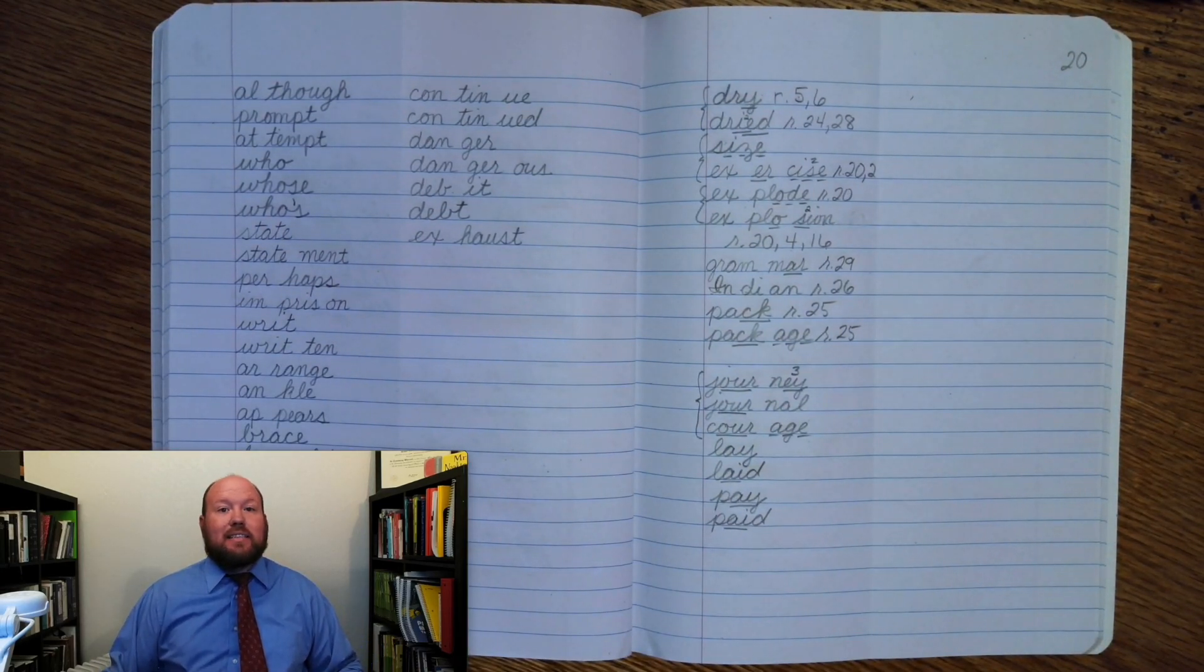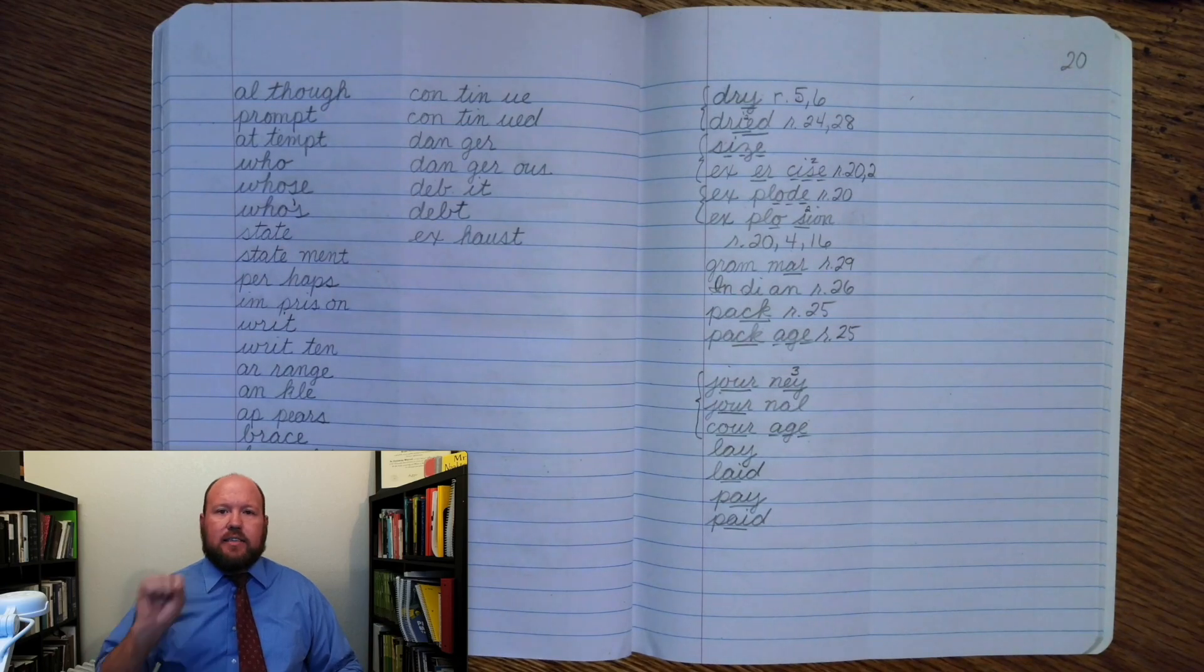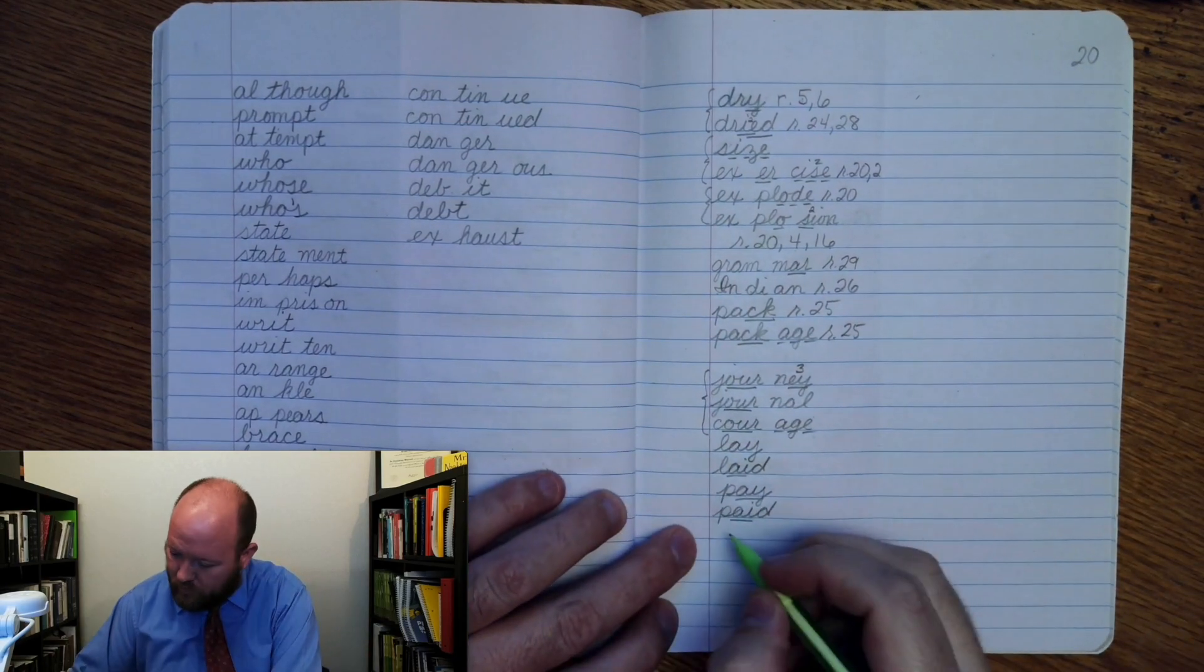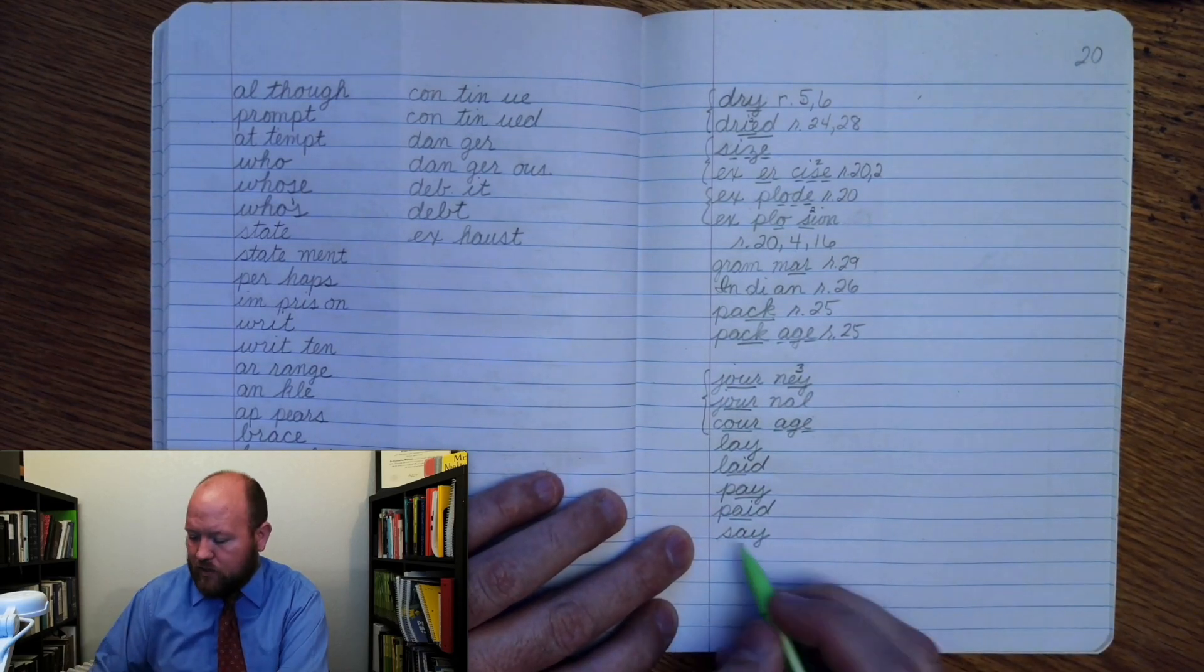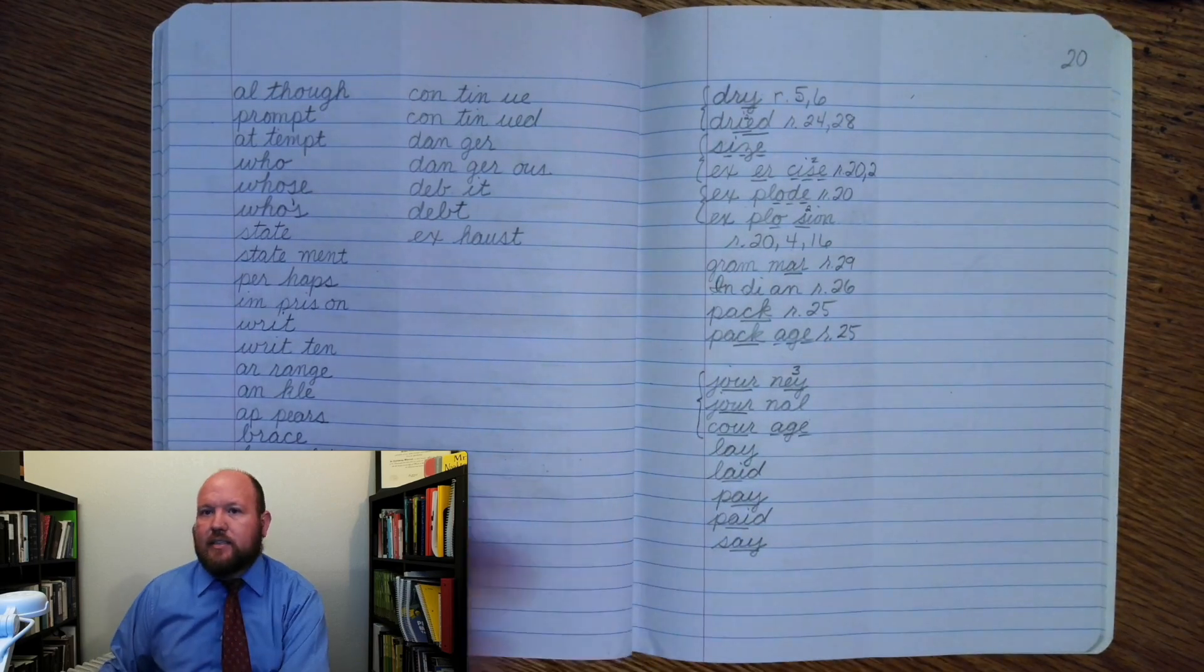The next word is say. What did you say? Say: S-A. Say. Write say: S-A. Say. Markings: S-A once. Say.